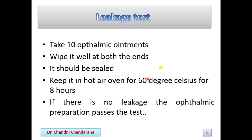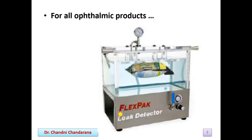For the leakage test, take 10 ophthalmic ointments, wipe them well at both ends ensuring they are sealed, and keep them in a hot air oven at 60 degrees centigrade for 8 hours. If there is no leakage, the preparation passes the test; if leakage is found, it fails. For all ophthalmic products, we can use a leakage detector instrument to directly detect leakage.